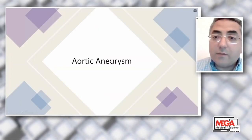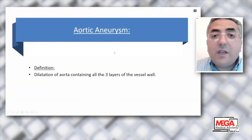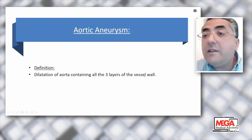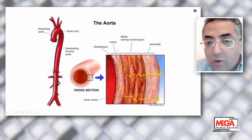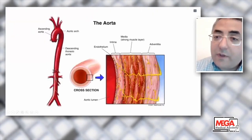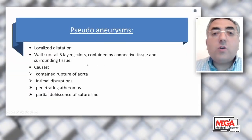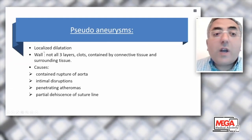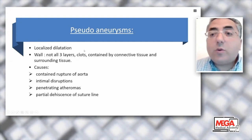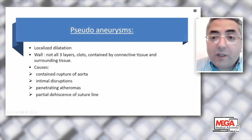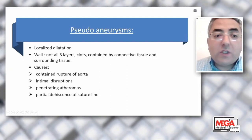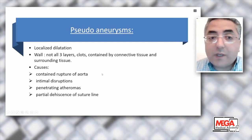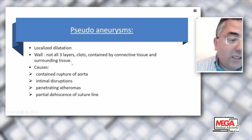An aortic aneurysm is defined as dilatation of the aorta containing all three layers of the vessel wall — intima, media, and adventitia. A pseudoaneurysm is different: not all layers are dilated; there is localized dilatation, not involving all three layers, contained by connective tissue and containing clots. Pseudoaneurysm is usually caused by contained rupture, intimal disruptions, penetrating atheromas, or partial dehiscence of a suture line — it is dangerous and may lead to re-operation.